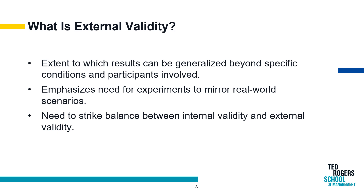A fundamental aspect of external validity is the emphasis on ecological validity. This facet underscores the necessity for experimental settings to closely resemble real-world scenarios. The more faithfully an experiment mirrors the complexities of the environments it seeks to inform, the more robust and applicable its findings become. In essence, external validity prompts researchers to transcend the controlled environments of the laboratory and consider the implications of their work within the dynamic and nuanced landscapes of the broader world.